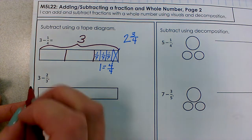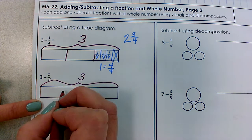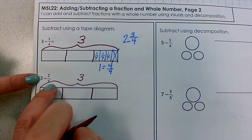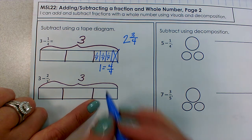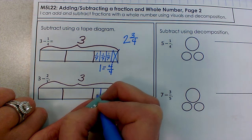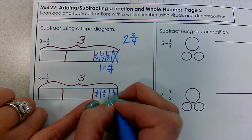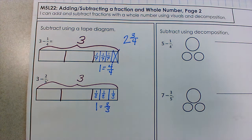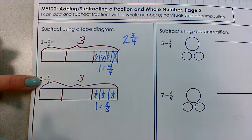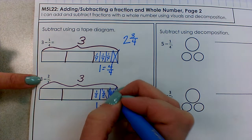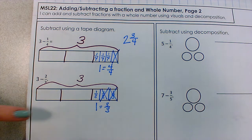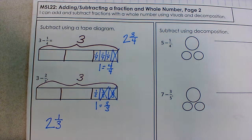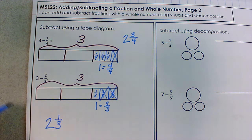Let's look at another one: three minus two thirds. Again I label my tape diagram as three and partition it to show one whole, two wholes, three wholes. But I need to subtract two thirds and I don't have any thirds. So I take one of my whole pieces and turn it into thirds — one third pieces. One equals three thirds; I haven't changed anything, I just renamed it. Now I take away two thirds: one, two — I cross those out. I have two whole pieces and one third left. My answer is two and one third.